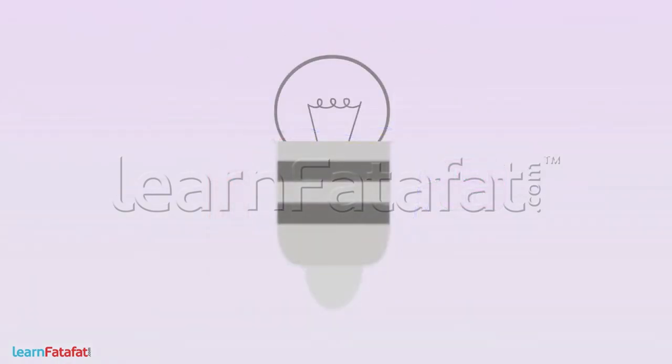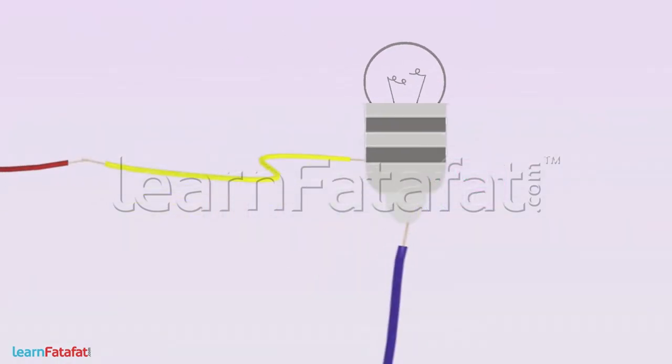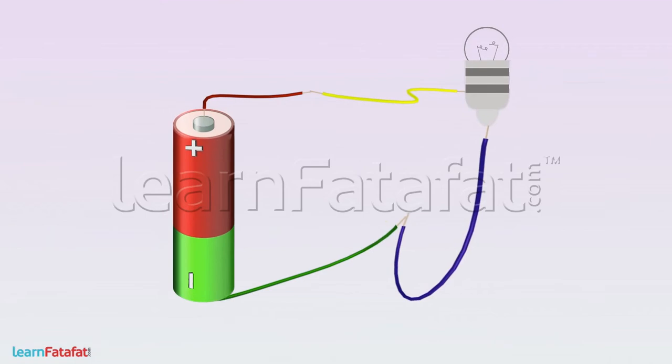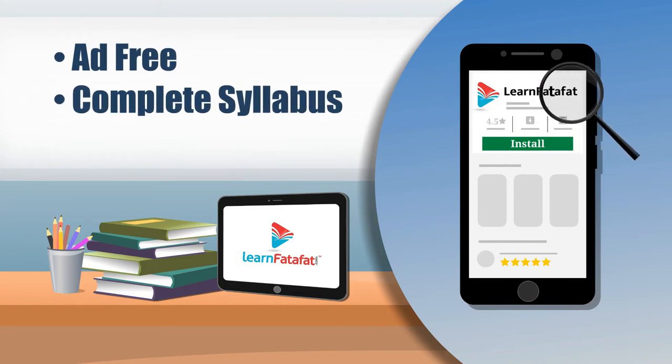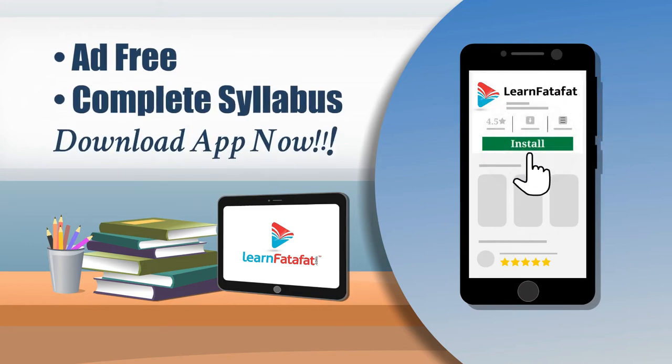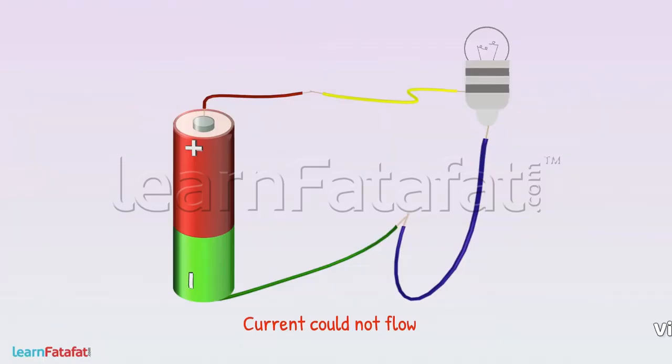If the filament of the bulb is broken, then the circuit is said to be broken and so current cannot flow. As a result, the bulb won't light up. Such a bulb is said to be fused.